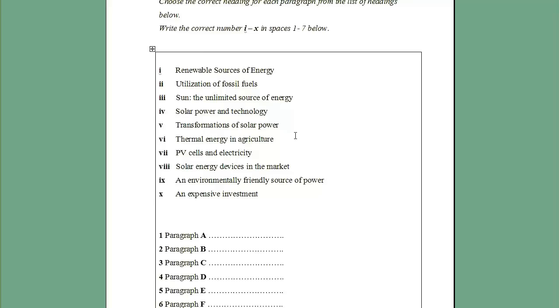So in this task, scan the whole paragraph but pay attention to the details in the headings. For example, let's take this heading over here, thermal energy in agriculture. Okay, the whole paragraph now should describe clearly without any doubt or confusion thermal energy and its use in agriculture. If the paragraph mentions briefly agriculture, for example, then this might not be the correct heading.